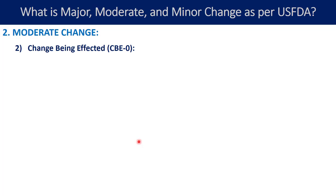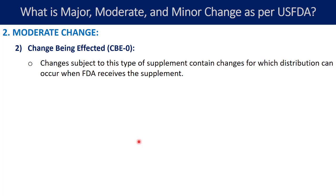The second type of moderate change is CBE0, Change Being Effected with zero days waiting. Changes subject to this supplement type allow distribution to occur as soon as FDA receives the supplement. You do not need to wait 30 days — once you receive acknowledgement from FDA that your CBE0 supplement was received, you can start distributing the product with the proposed change immediately. No waiting period is required for CBE0, unlike CBE30 where you wait 30 days after acknowledgement.